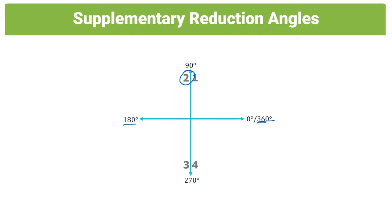Any angle in the second quadrant would be less than 180 degrees. So our machine for the second quadrant would be 180 minus theta, because it's 180 pull back. In the third quadrant, the angle would be greater than 180 degrees, because it's 180 push forward.